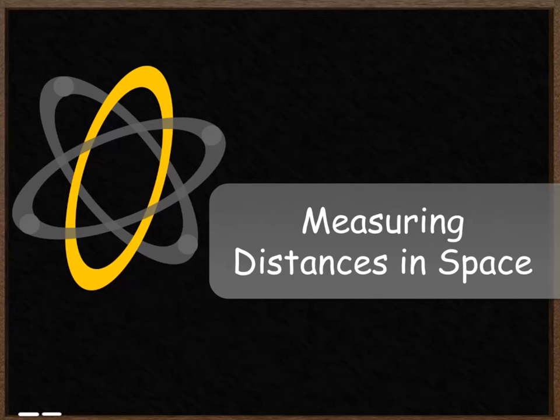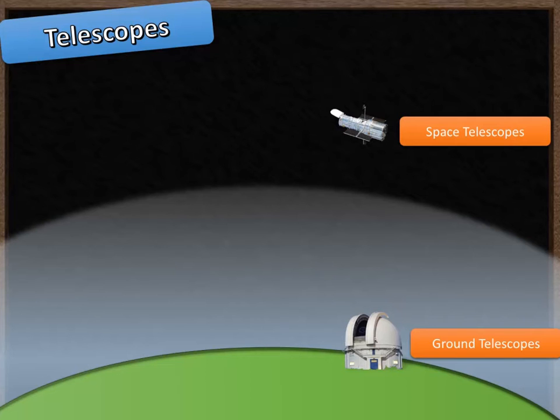Measuring distances in space. Measuring distances to objects in space is an incredibly difficult thing to do for a number of reasons. The first one being that they're incredibly far away. The second reason is that you can't actually get to those objects to see how far they are away.